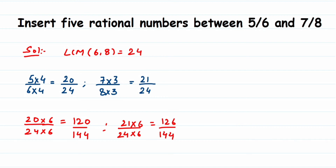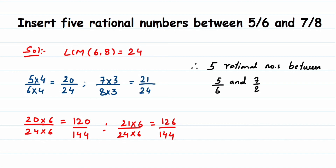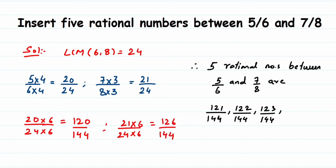Now look — we have 120 and 126 in the numerator, and between them we have exactly five numbers: 121, 122, 123, 124, and 125. Therefore, the five rational numbers between 5/6 and 7/8 are: 121/144, 122/144, 123/144, 124/144, and 125/144.